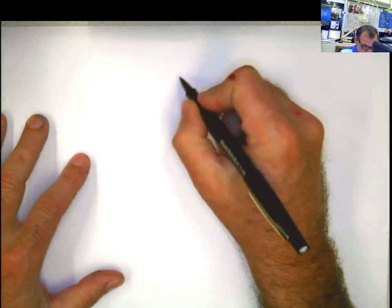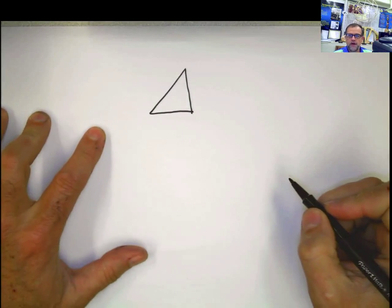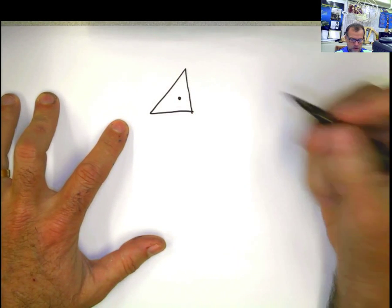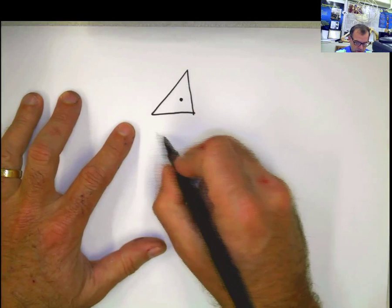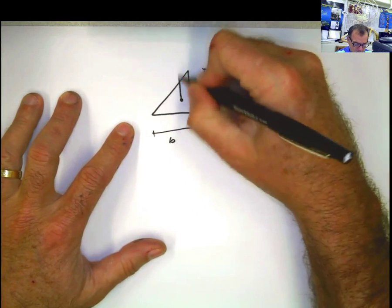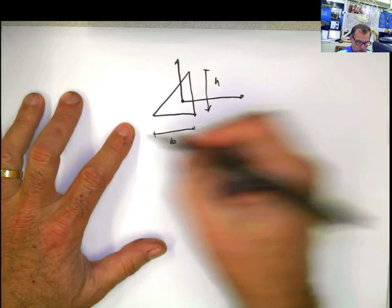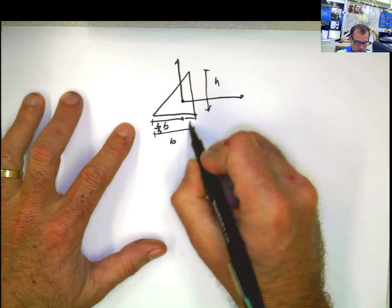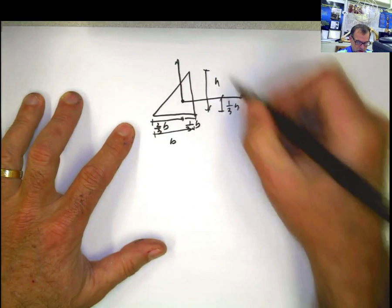We have a triangle. And we want to calculate the moment of inertia with respect to the centroid. We know where the centroid is located. So if this is a triangle with base B and height H, the centroid is going to be located 1/3 from the right angle — so 2/3 of B and 1/3 of B. And similarly, from here it's 1/3 of H and 2/3 of H.